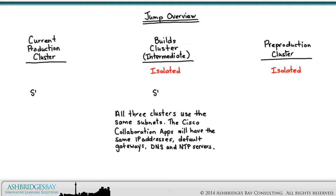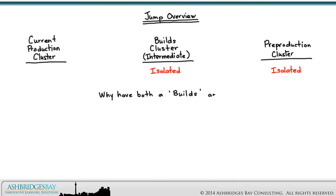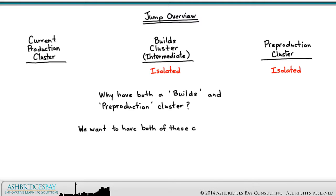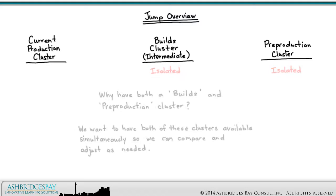At the end of the migration, the Current Production and the Builds clusters will be shut down, and the Pre-Production cluster VLANs will be changed to the Production cluster VLANs. Why have both the Builds and the Pre-Production cluster? We want to have both of these clusters available simultaneously so we can compare and adjust as needed. This also facilitates parallel activities — you can work on these clusters at the same time.